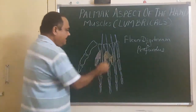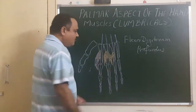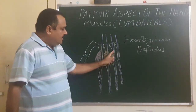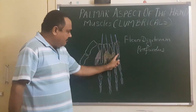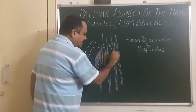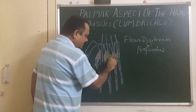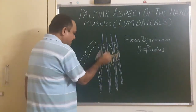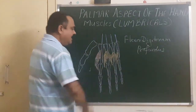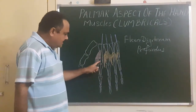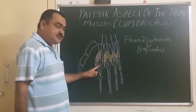This is the third lumbrical and here is the fourth lumbrical. The fourth lumbrical takes origin from the tendon of the ring finger and the tendon of the little finger. So we have the first, second, third, and fourth lumbricals, and these muscles cross the metacarpophalangeal joint.